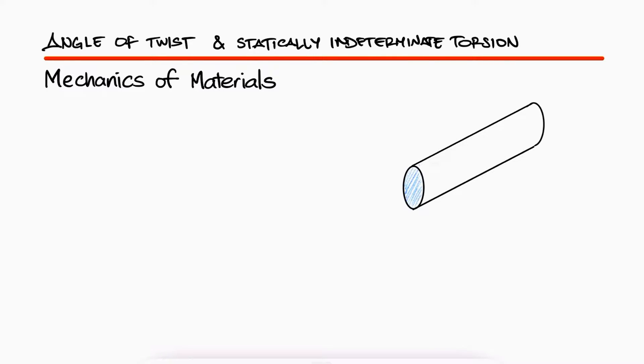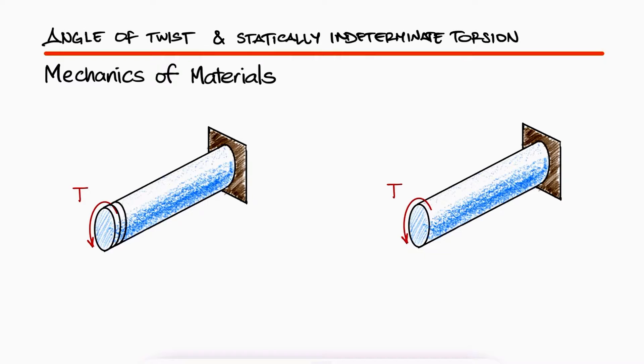For a simple constant cross-section area rod that is fixed at one end and subjected to a torque T at the other end, we previously saw that we can think of it as the geometry that is formed when piling disks against each other.